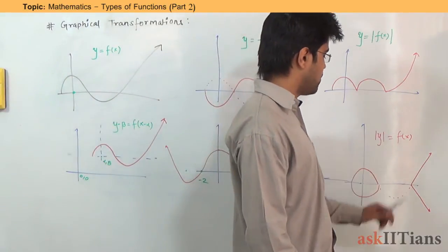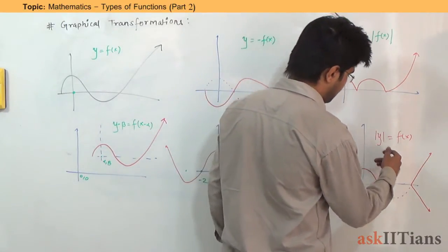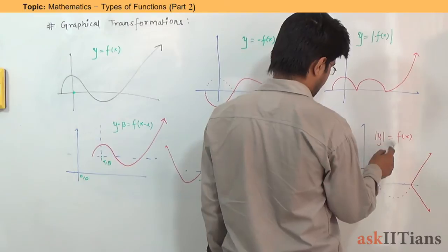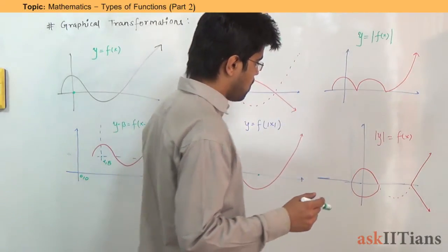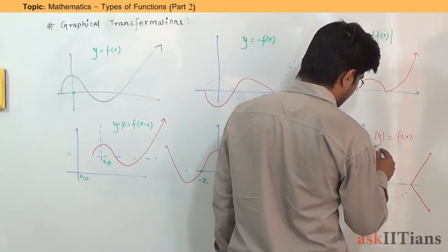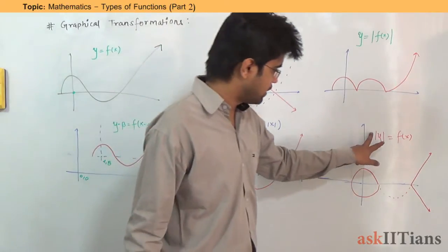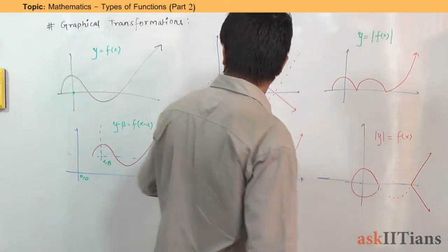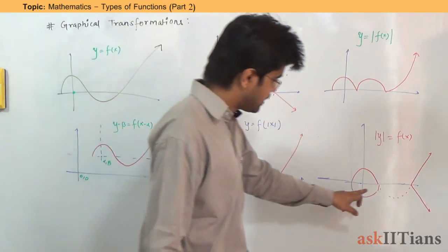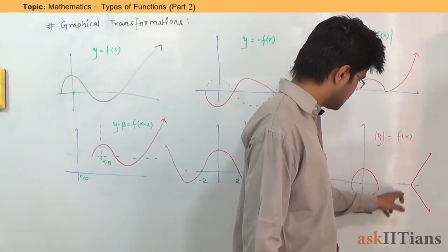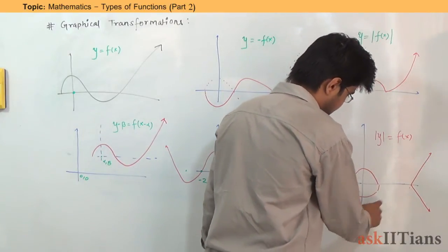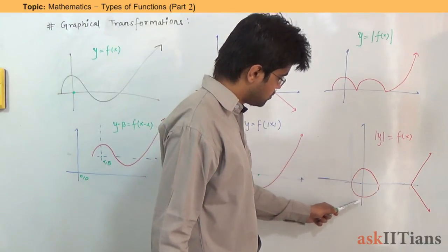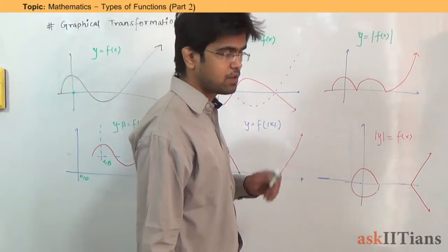For |y| = f(x), whatever comes out is always positive — you are getting your x values only from positive y. So neglect the negative y part of the graph, keep the positive y part, and take its image in the x-axis. Because if a value was our solution with positive y, it is also a solution with negative y — since |−y| = |y|. So we add the mirror image of the positive part below the x-axis.